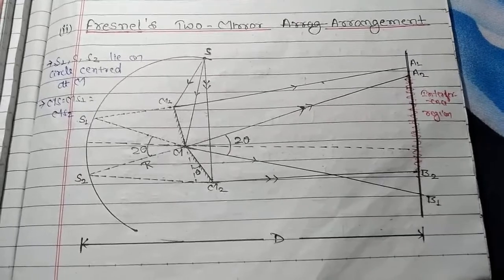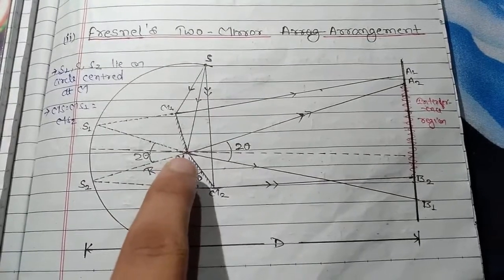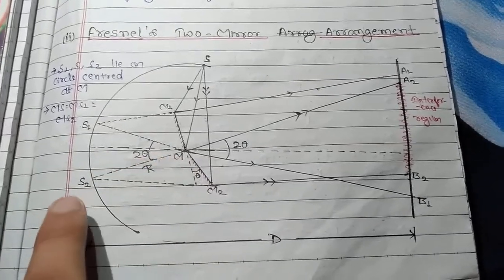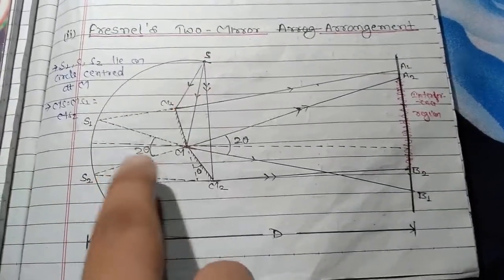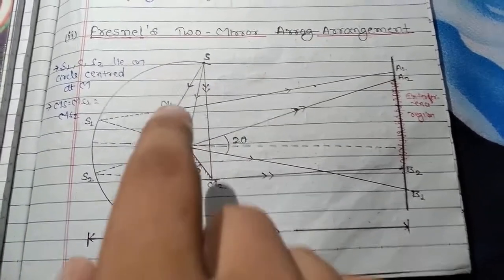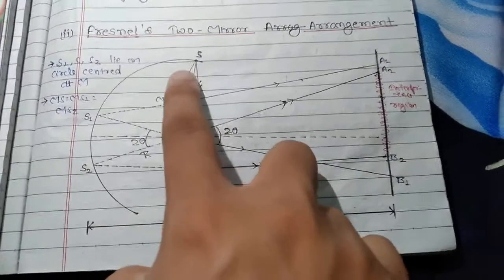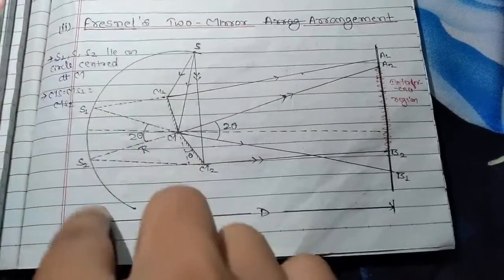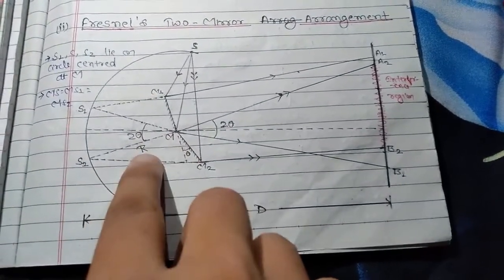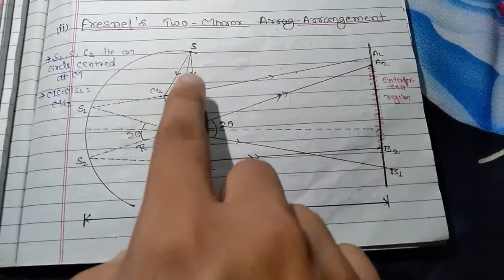From the figure, we see that MS is equal to MS1 and MS1 is equal to MS2, so all three are at equal distance from point M. This arrangement is such that M is the center of a circle, and S, S1, and S2 lie on this circle. Let the distance MS2 equal R; then MS1 is also equal to R, and MS is also equal to R.